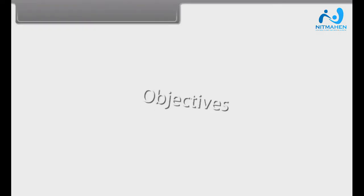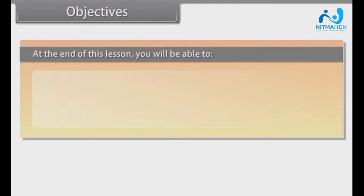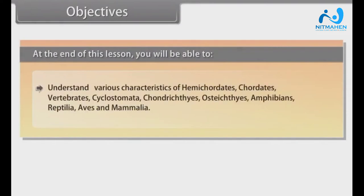Objectives. At the end of this lesson, you will be able to understand various characteristics of hemichordates, chordates, vertebrates, cyclostomata, chondrichthyes, osteichthyes, amphibians, reptilia, aves and mammalia.